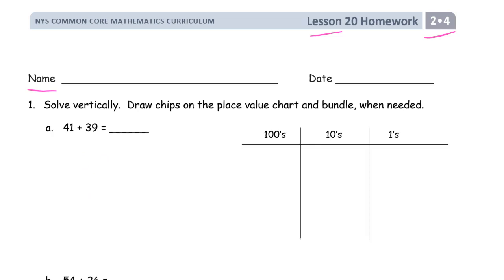It becomes especially important when you're adding more than two numbers at a time. Always start with the ones digits first. Mentally, you're used to starting with the largest place values — the hundreds and the tens. But on paper, you have to do the ones digits first, because otherwise, if you have to bundle anything, you end up having to do the tens digits over again.